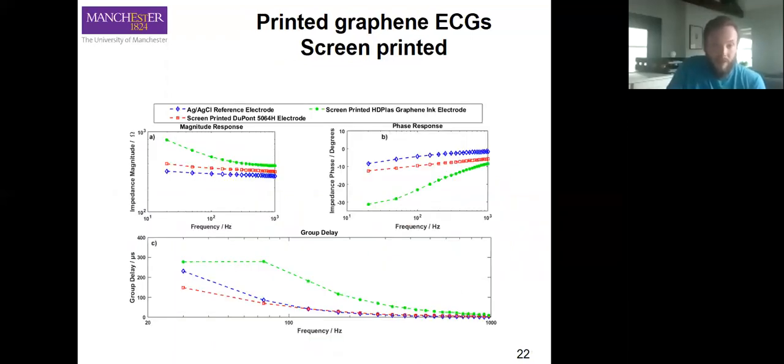When we compare the group delay, phase response, and magnitude response, we see slight changes but nothing particularly significant enough to consider that one is much better than the other in this case. We can say with screen printing we are quite capable—commercial inks used—reasonably good ECG electrodes, and there's further scope.